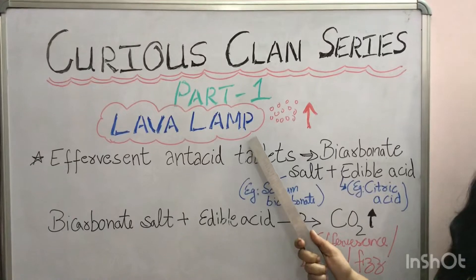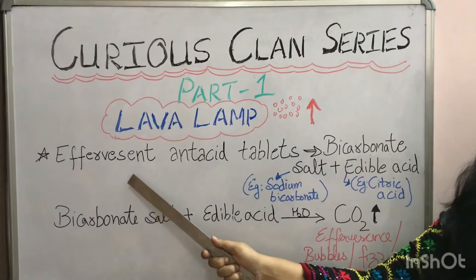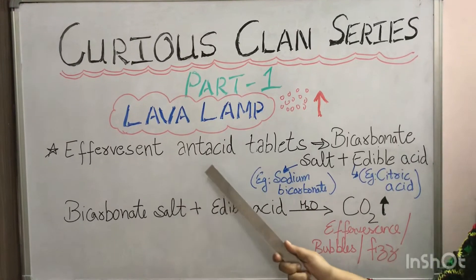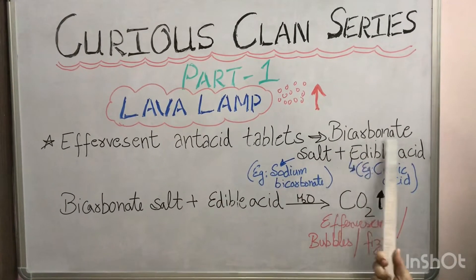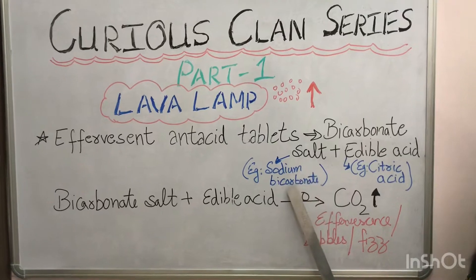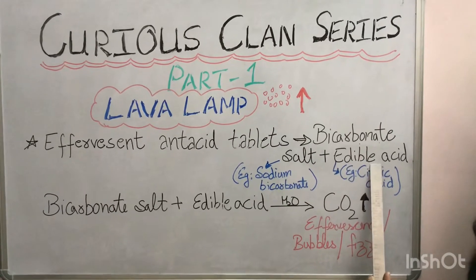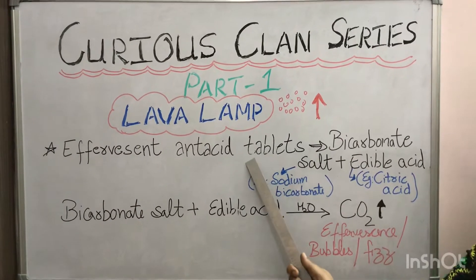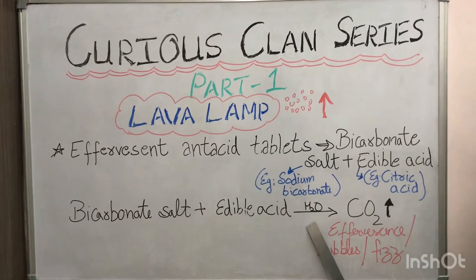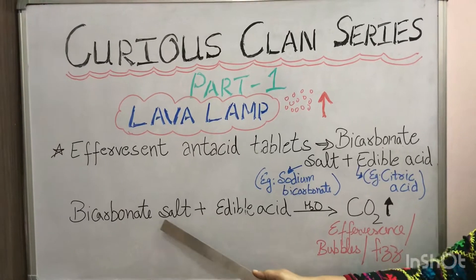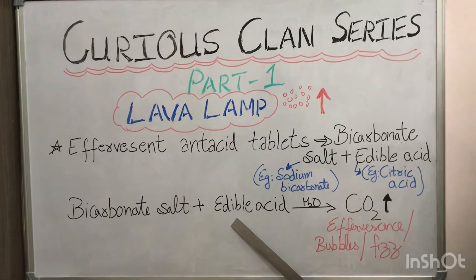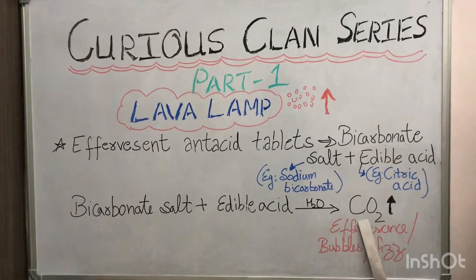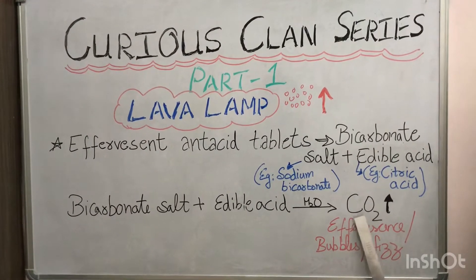Let me explain the chemistry behind the lava lamp activity. The student has used effervescent antacid tablets, which contain a bicarbonate salt like sodium carbonate and an edible acid like citric acid or tartaric acid. When these tablets are put in water, the bicarbonate salt and the edible acid react with each other to liberate carbon dioxide gas.